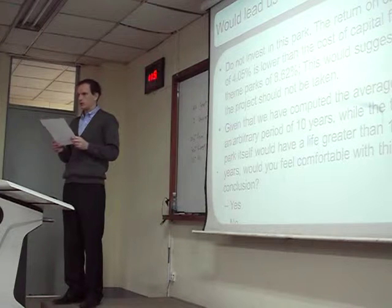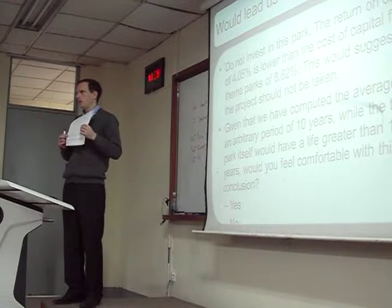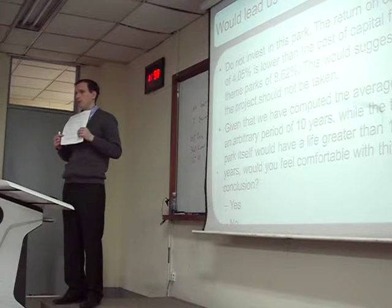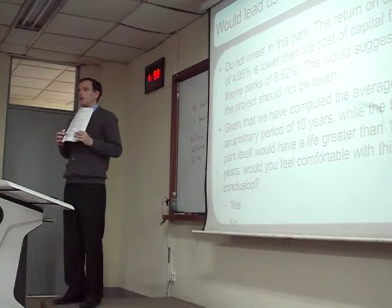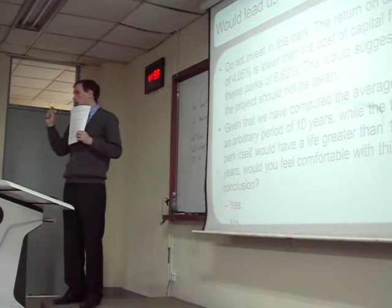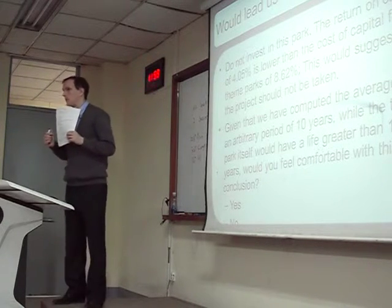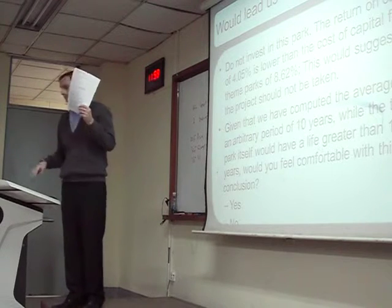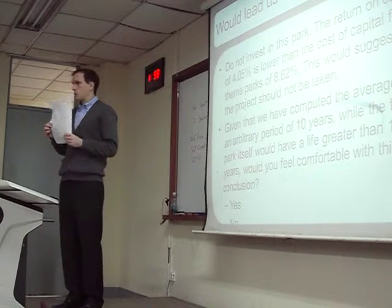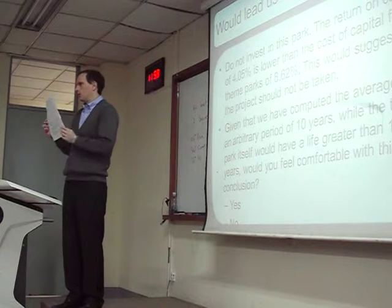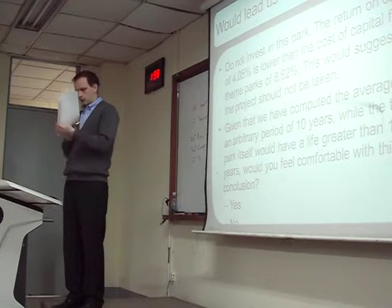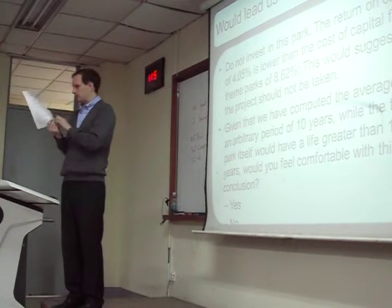Then we are going to use the bottom-up beta. It would be easy to go to Yahoo Finance and find the regression beta — we can just check the beta there. But we said the bottom-up beta can be more accurate. So we are going to calculate the bottom-up beta for the company. The first step is to find a breakdown of the businesses your firm is in — you can get this from the 10K document in Yahoo Finance.